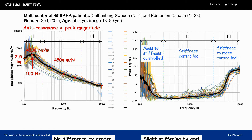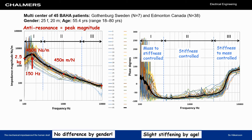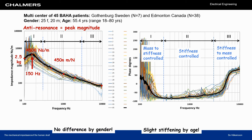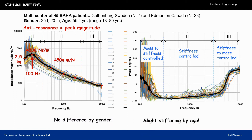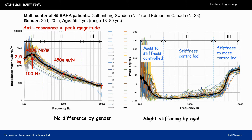Most importantly, we have an anti-resonance or magnitude peak at 150 Hz. Below this frequency, the impedance is determined by the skull mass, and above it is determined by the skull bone compliance.